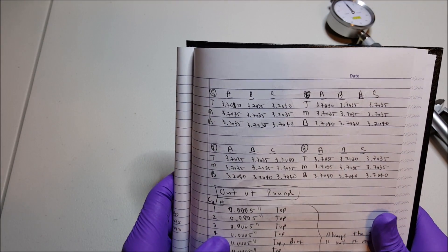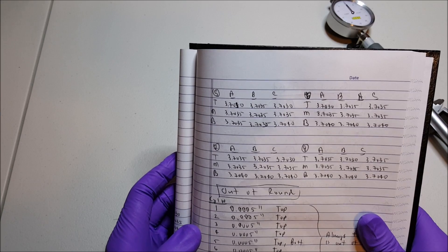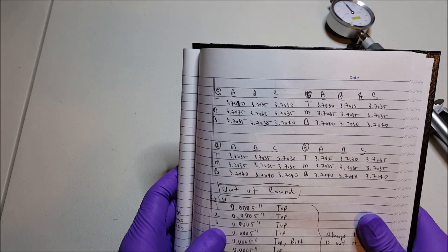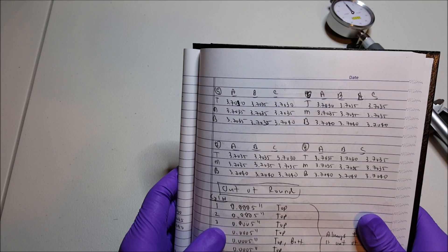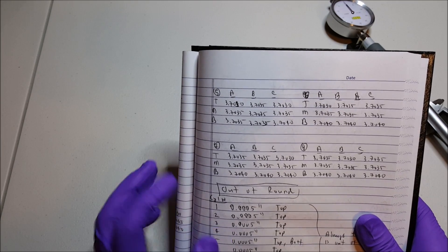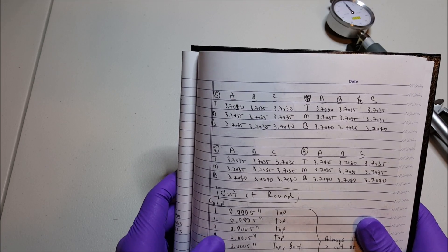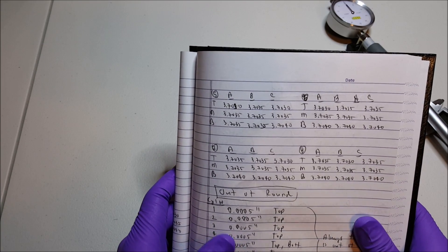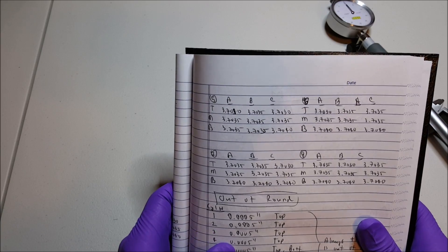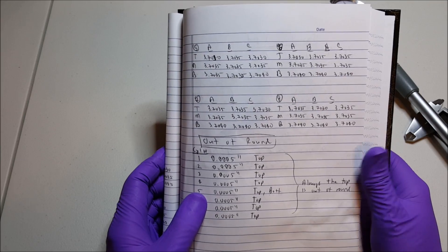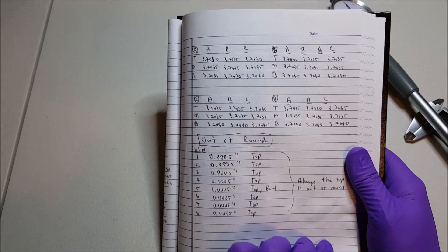So out of round, I'm looking at about 5 ten thousandths of an inch. This is mostly in the top. So the top part of the piston is a little bit out of round by 5 ten thousandths. All the other mid and bottom are actually identical, at least within the measurement here.